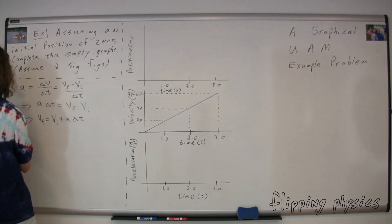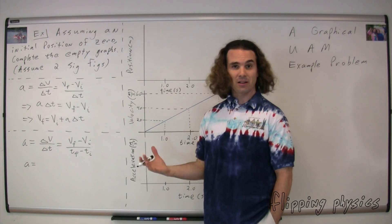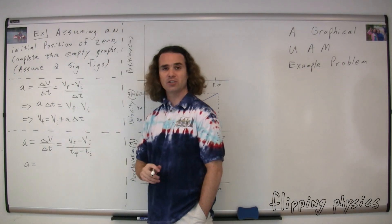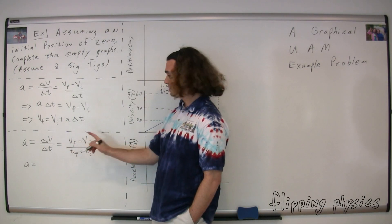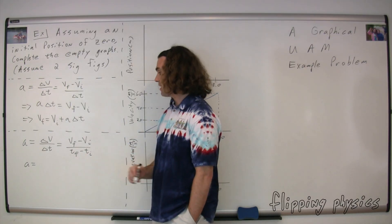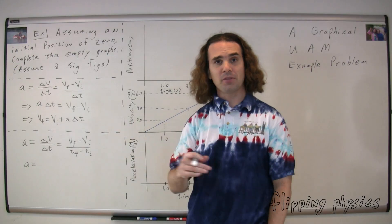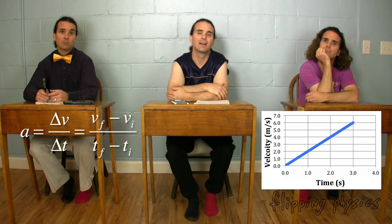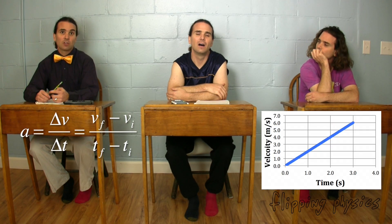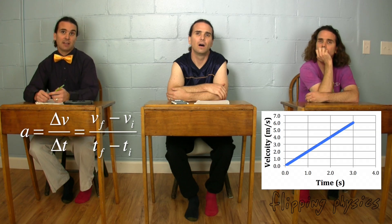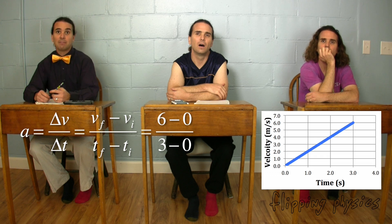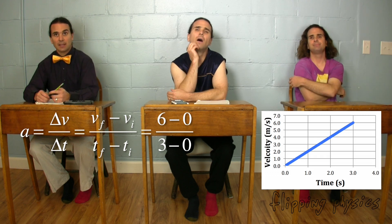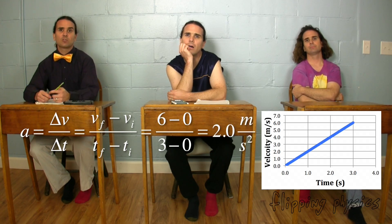Bobby, you're right. Okay, I'm down with that. Acceleration equals change in velocity over change in time. Delta — change in — is always final minus initial, so we get velocity final minus velocity initial on top, divided by the quantity time final minus time initial on the bottom. Billy, can you figure out the numbers? We need to pick two points on the graph, and because the slope is constant, it doesn't matter which two points we pick — we will get the same answer. So let's go from zero to three seconds. Velocity final is six meters per second and velocity initial is zero. Time final is three seconds and time initial is zero. That gives us 2.0 meters per second squared for our acceleration.